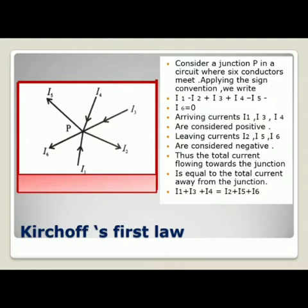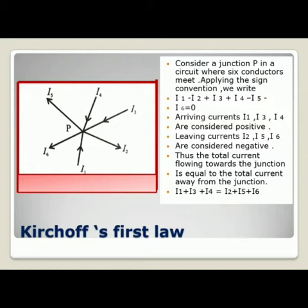The currents I1, I3 and I4, which are moving inwards, are positive currents, whereas the leaving currents I2, I5 and I6 are considered negative. Thus, the total current flowing towards the junction is equal to the total current flowing away from the junction. Taking all negative values to the other side, the sum of incoming currents equals the sum of leaving currents.